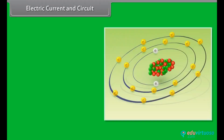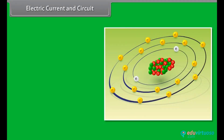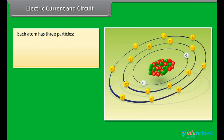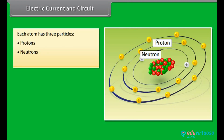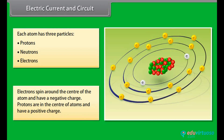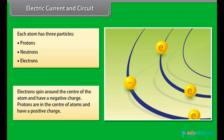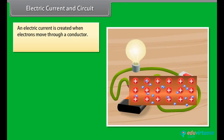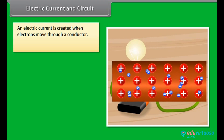All things around us are made up of atoms. Each atom has three particles: protons, neutrons, and electrons. Electrons spin around the center of the atom and have a negative charge. Protons are in the center of atoms and have a positive charge. An electric current is created when electrons move through a conductor.